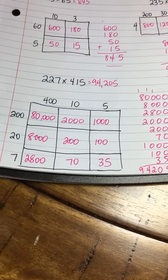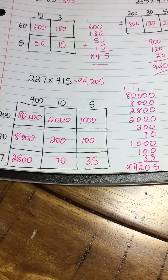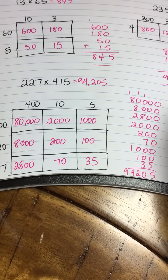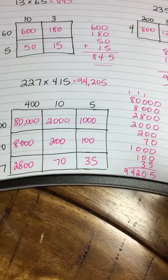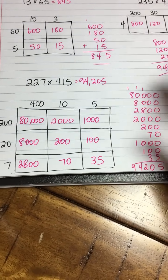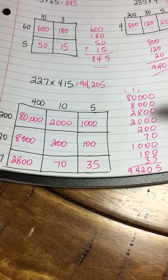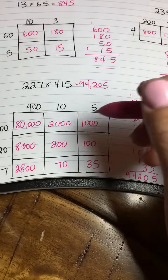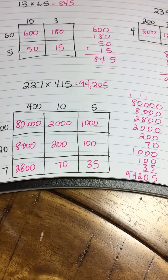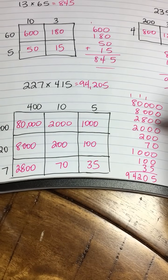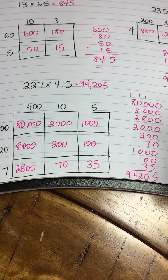You can see how this method, once you get more digits, does get more time-consuming, and there is a little bit more room for error when you're adding that many numbers together. But it does really enhance understanding. This is a strategy that you might like to use when you are first introducing multi-digit multiplication because you'll find that it really makes sense to your students when you're expanding the factors and really working with the numbers and the value of the numbers.